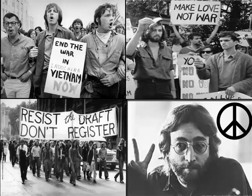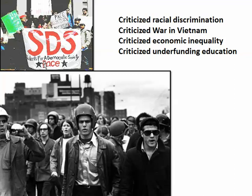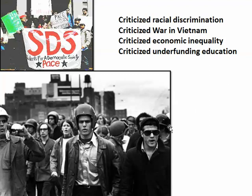Another group was called the Students for a Democratic Society, SDS, which was a socialist group at the college level. These youngsters really criticized the government for racial discrimination and wanted to end the war in Vietnam. They criticized economic inequality in the United States and also criticized the underfunding of education, arguing that the money spent on the war in Vietnam could be better spent at home on education for young students.